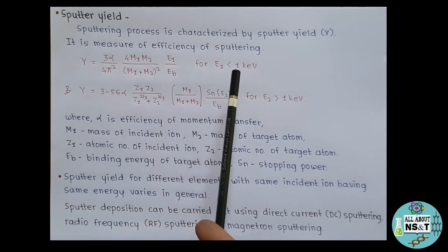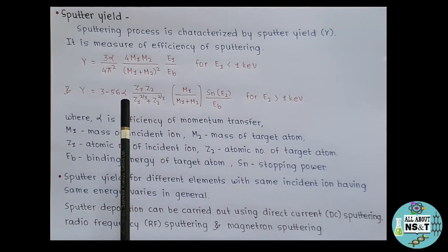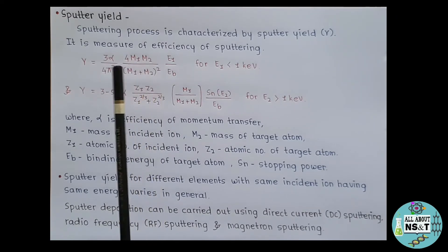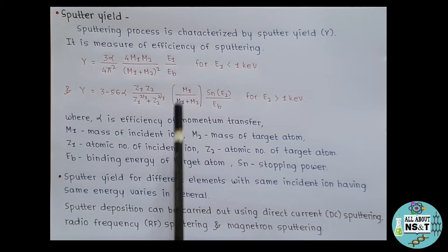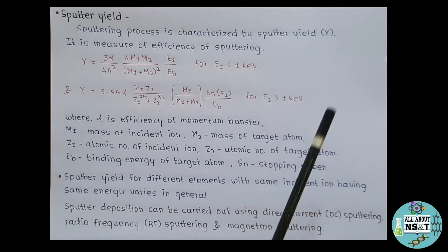Where alpha is efficiency of momentum transfer. And Y equals 3 minus 0.56 alpha, Z1, Z2 over Z1 raised to 2/3 plus Z2 raised to 2/3, M1 divided by M1 plus M2, Sn E2 over Eb, for E2 is greater than 1 electron volt.